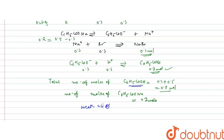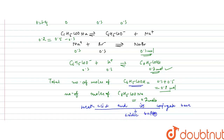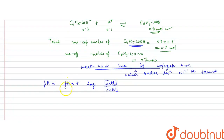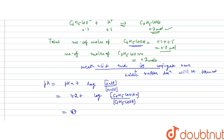The weak acid and its conjugate base form an acidic buffer solution. The pH of an acidic buffer is calculated using the Henderson-Hasselbalch equation: pH = pKa + log([salt] / [acid]). Here, salt is sodium benzoate and acid is benzoic acid, with pKa = 4.2. So pH = 4.2 + log(0.2 / 0.8).